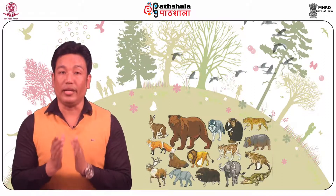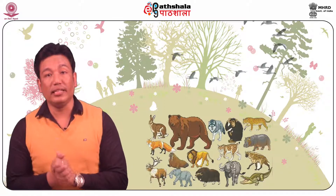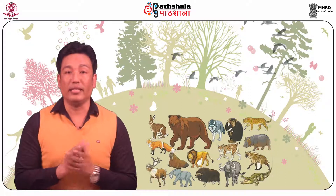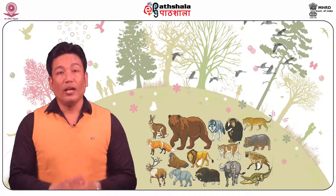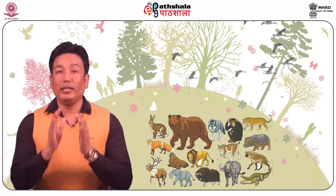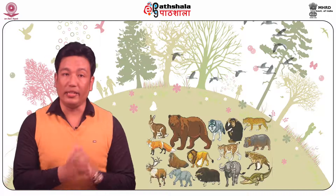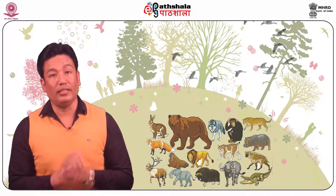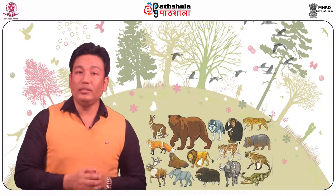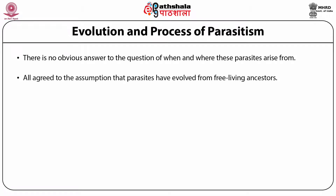About half a century ago, the evolution of drug resistance in bacteria was the first observation that triggered a series of attempts to understand the cause and relevance of parasite evolution to diseases. The original research achieved fertile ground based on the application of evolutionary theory to parasites. In recent years, parasitology and evolutionary biology have undergone rapid advances. There is no obvious answer to when and where these parasites arise from, but all agree to the assumption that parasites have evolved from free-living ancestors.